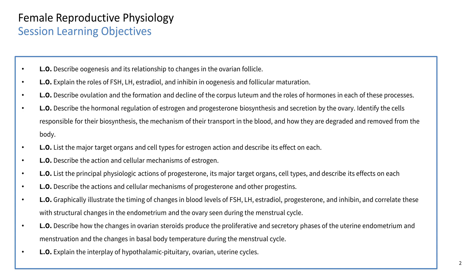We'll describe the hormonal regulation of estrogen and progesterone biosynthesis and secretion via the ovary, identify cells responsible for their biosynthesis, the mechanism of their transport in blood, and how they are degraded and removed from the body. We'll list the major target organs and cell types for estrogen action and describe its effects on each. We'll describe the action and cellular mechanisms of estrogen, list the principal physiological actions of progesterone, its major target organs, cell types, and describe its effects on each. We'll describe the actions and cellular mechanisms of progesterone and other progestins.